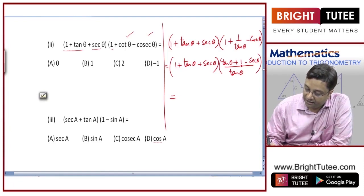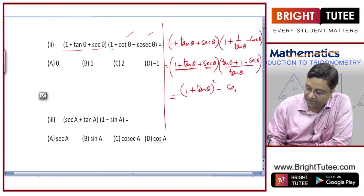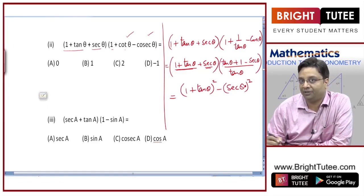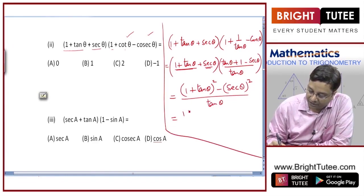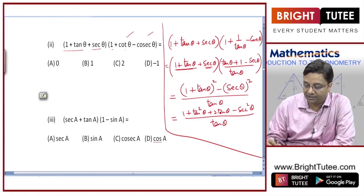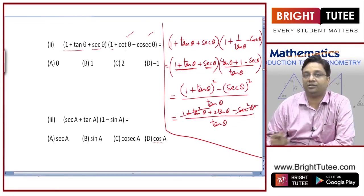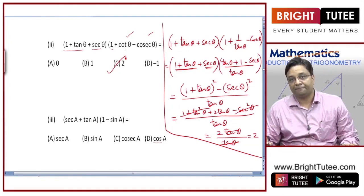Multiplying the two brackets — (1 + tanθ + secθ)(1 + tanθ − secθ) — gives (1 + tanθ)² − secθ², which equals 1 + tan²θ + 2tanθ − sec²θ divided by tanθ. Since 1 + tan²θ equals sec²θ, these cancel, leaving 2tanθ divided by tanθ. Cancelling tan θ gives 2, so the correct option is C.